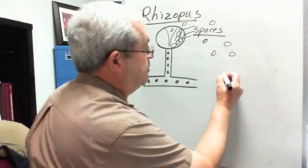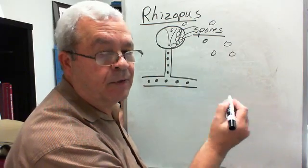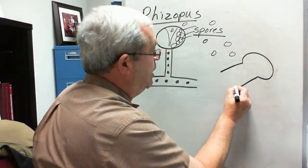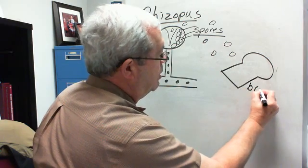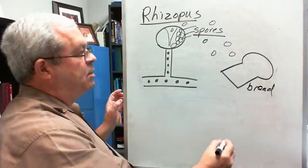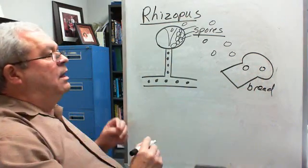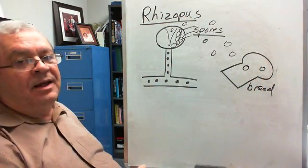So I'm not an artist, but I am going to attempt to represent a piece of bread. Just in case it's not recognizable, I will label it bread. And so the spores land in the bread. And what do they do? They germinate.